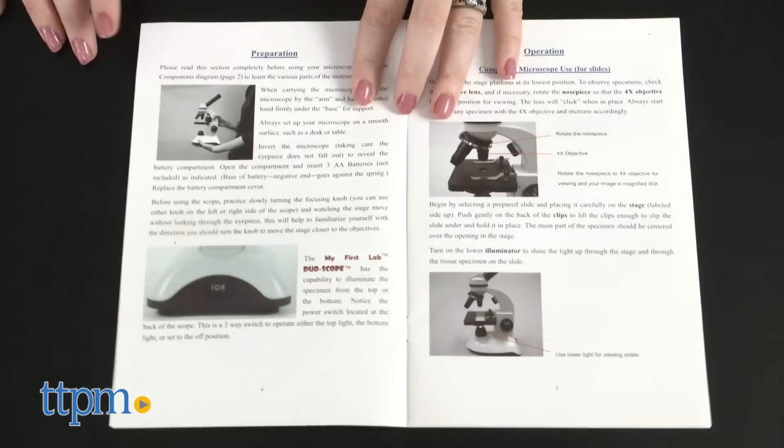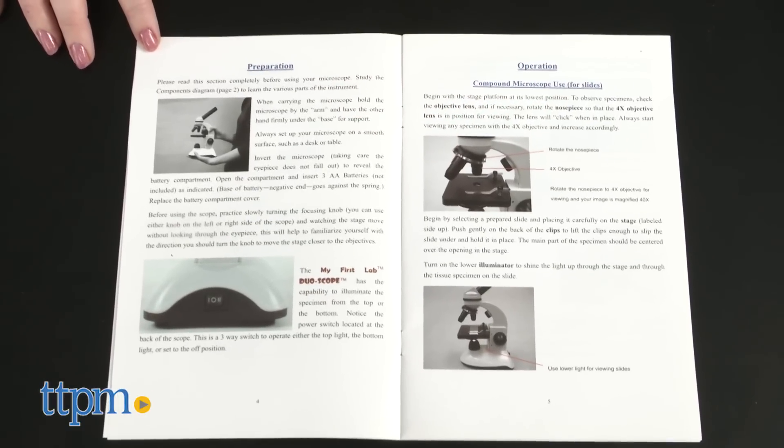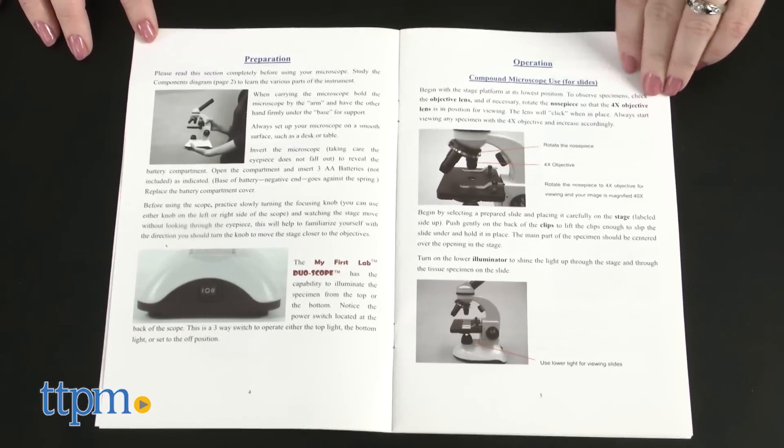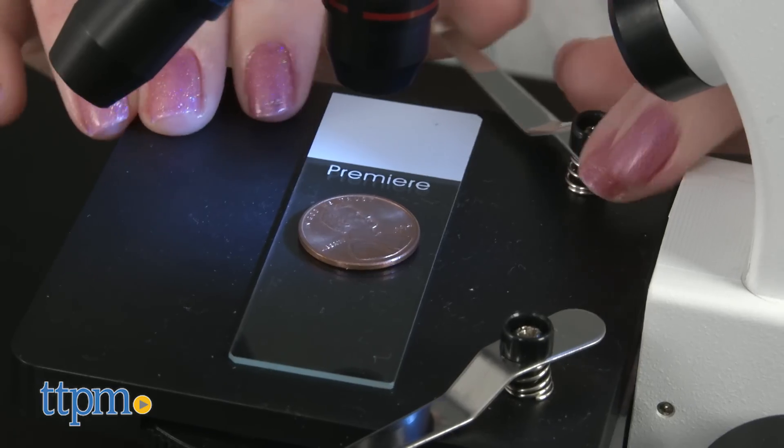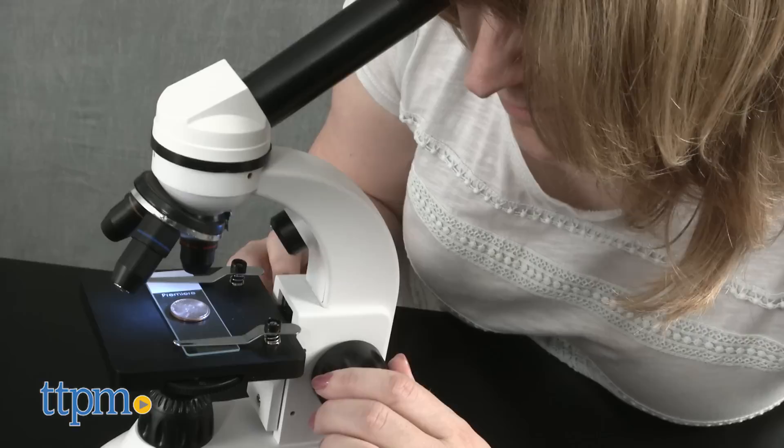The instruction manual guides kids in the preparation and operation of the microscope and then offers ideas for things that they can observe, such as salt or a penny. You'll need three AA batteries, which are not included.